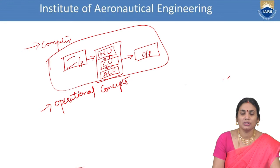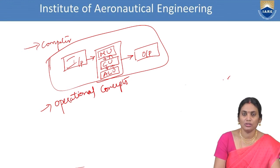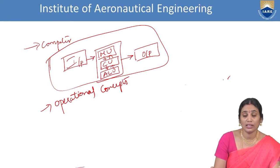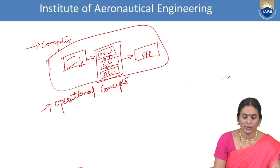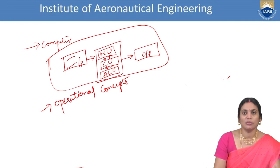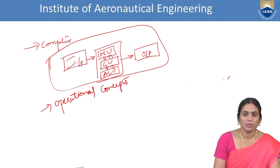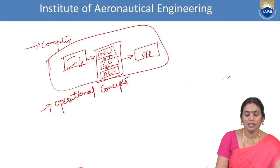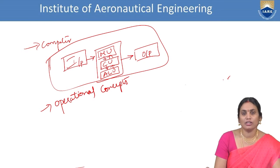In operational concepts, we focus on how exactly the data is given and how it is processed. We said the memory unit stores whatever programs and data you write. The control unit will then initiate the task to perform its operation. For example, when you write a C program, save it, and compile it, it needs to be executed by the control unit and the arithmetic logic unit.